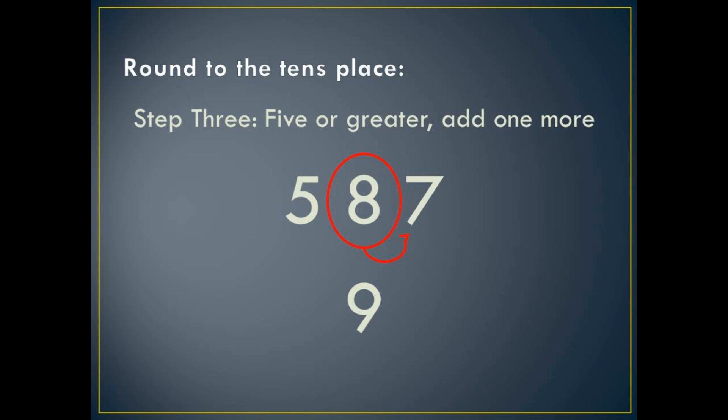Remember, if the digit to the right is less than five, you just rewrite the circled number underneath.